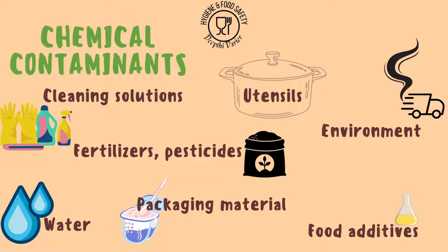Chemicals can also enter food from the environment — for example, industrial oils or vehicle exhausts during transportation of food. There can also be unapproved food additives. While some food additives are approved by regulatory agencies, other chemicals added to increase the flavor, color, or texture of food may be unapproved and can be chemical contaminants.